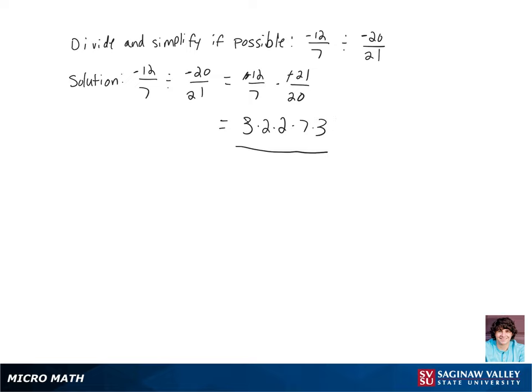Let's rewrite 12 as 3 times 2 times 2. 21 is 7 times 3, and let's rewrite 20 as 5 times 2 times 2, so we can do our simplifications.